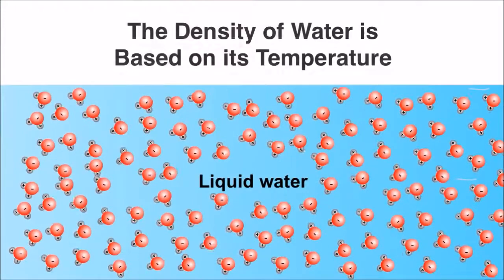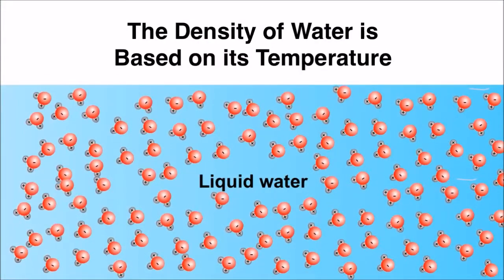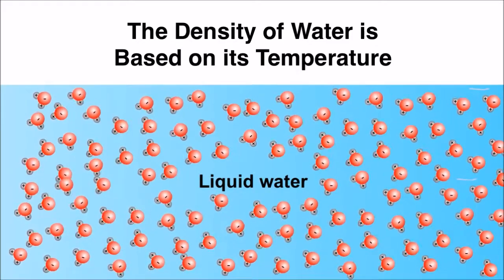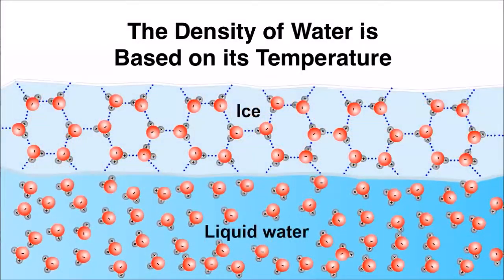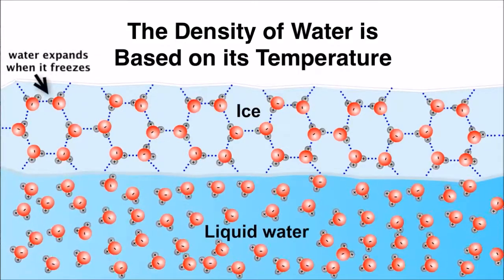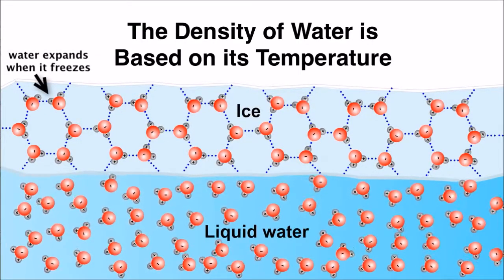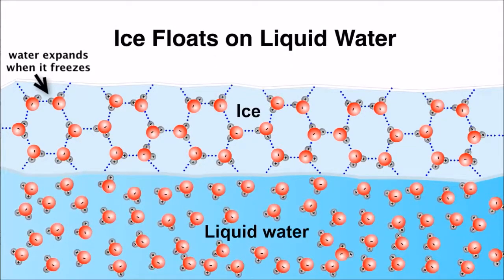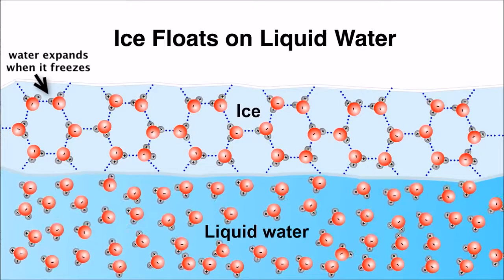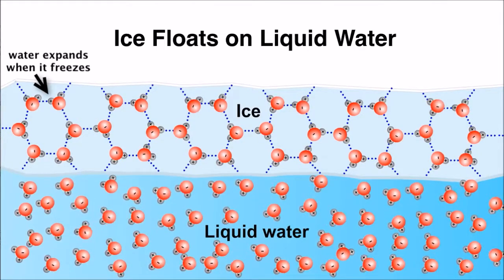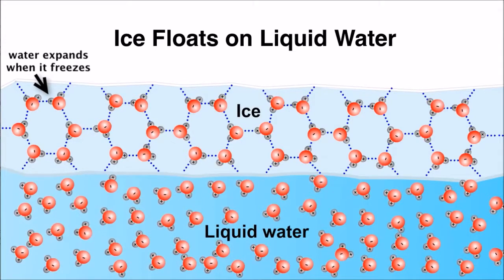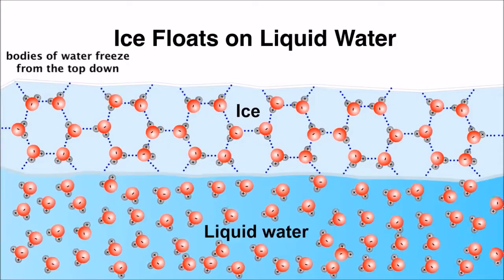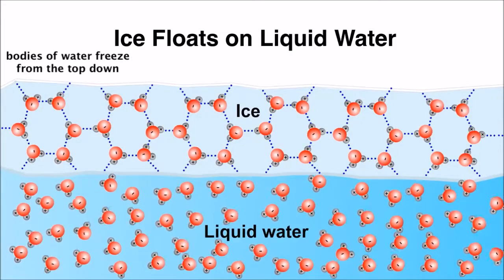Finally, unlike most compounds which contract when they freeze, the configuration of hydrogen bonds in water causes it to expand when it freezes, giving ice a lower density than liquid water - so ice floats. If ice were denser, it would sink and ponds and lakes would freeze solid, making life there impossible. Instead, bodies of water always freeze from the top down, and the ice on the surface acts as an insulator to protect the water below, allowing organisms to survive the winter.